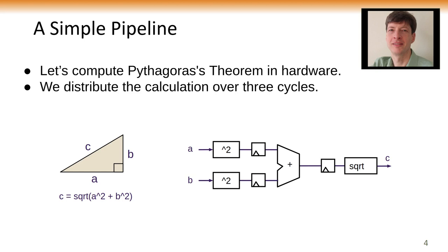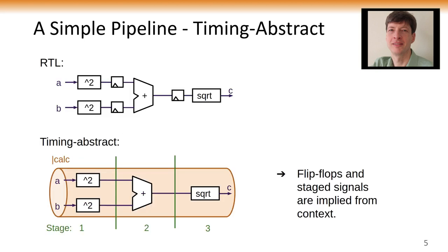In the first stage, we're squaring A and B. In the next stage, we add them together. And then in the third stage, we take the square root, and that gives us the distance C in this triangle. So that's the RTL picture of the pipeline logic. In a timing-abstract mentality, we would give ourselves the context of a pipeline depicted in the lower diagram here. That pipeline has pipeline stages, and the logic is distributed amongst those stages.